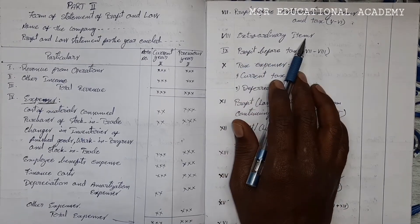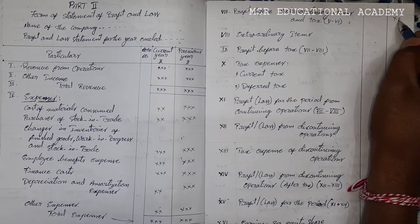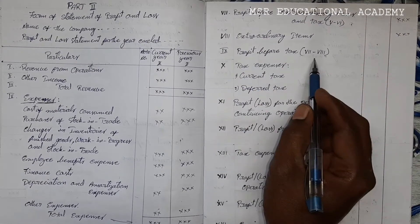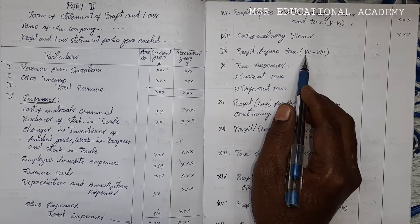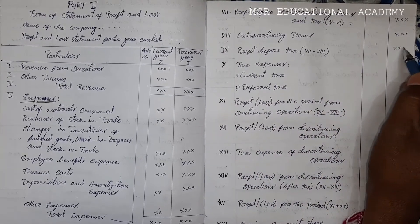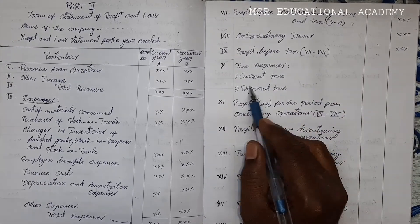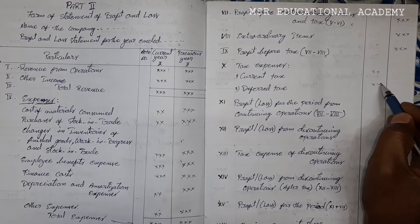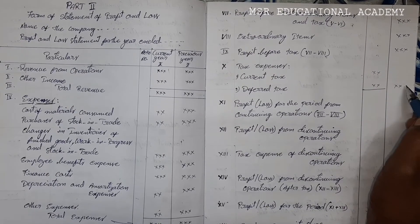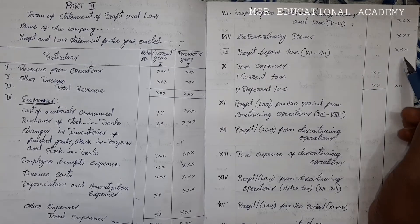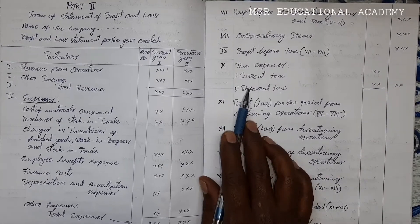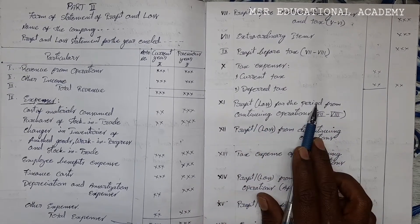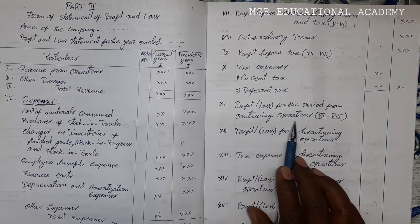After that, you deduct the extraordinary items, and then you will get profit before tax. From this profit before tax, deduct the current tax and deferred tax expenses. First add both of those together and deduct from profit before tax. After deducting the tax expenses from profit before tax, you will get profit or loss for the period from continuing operations.